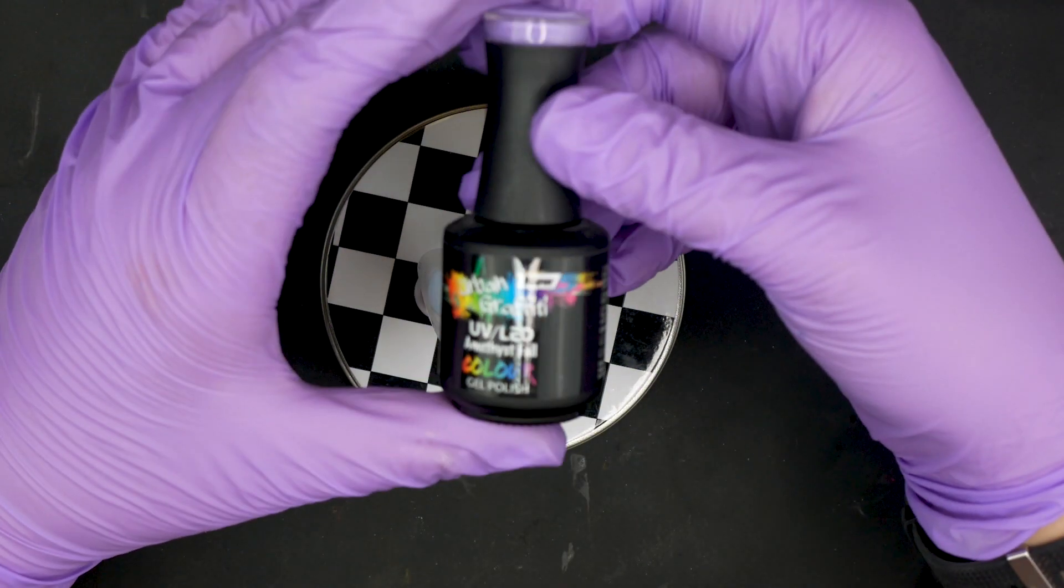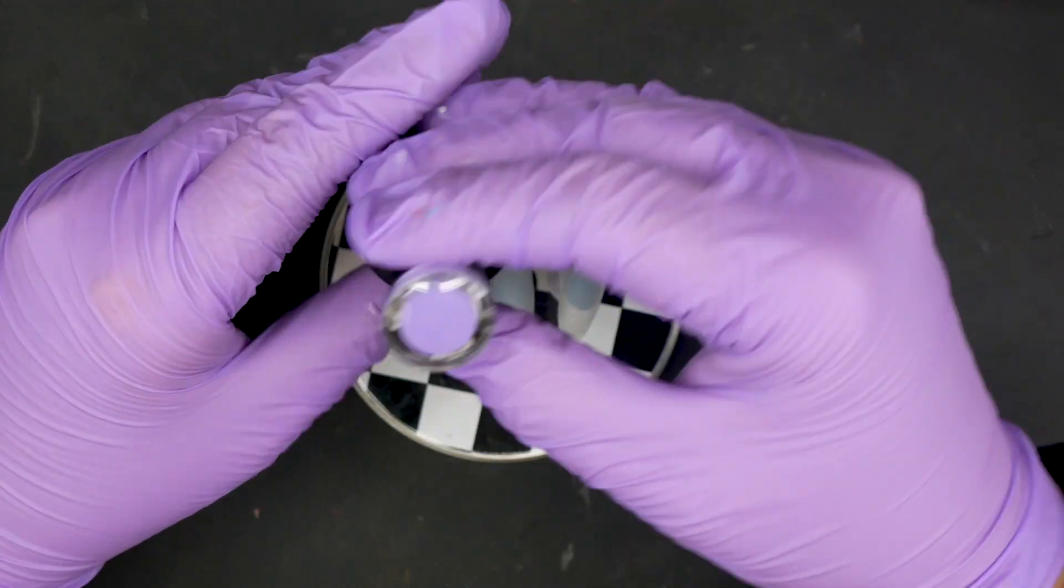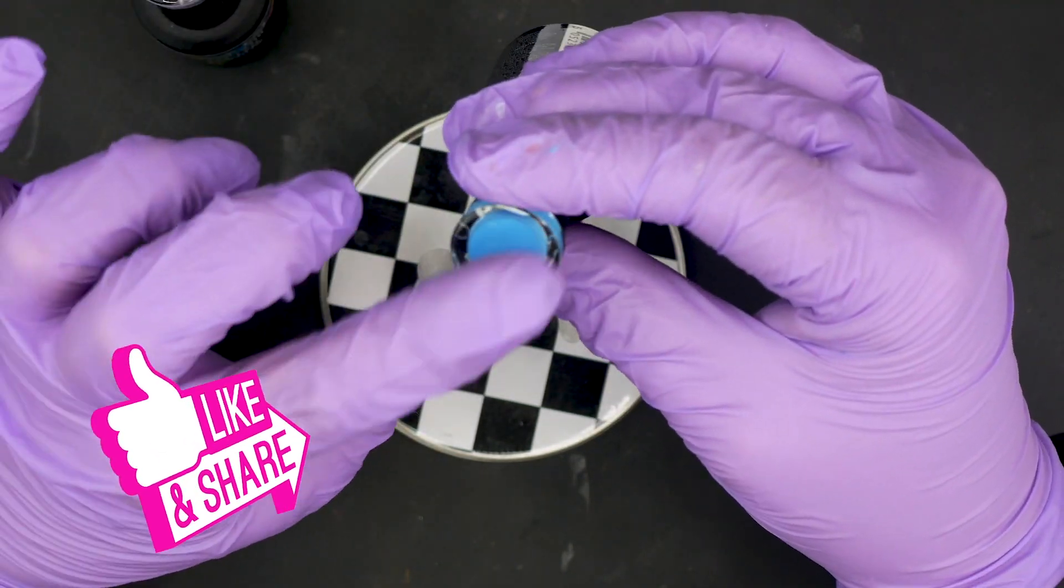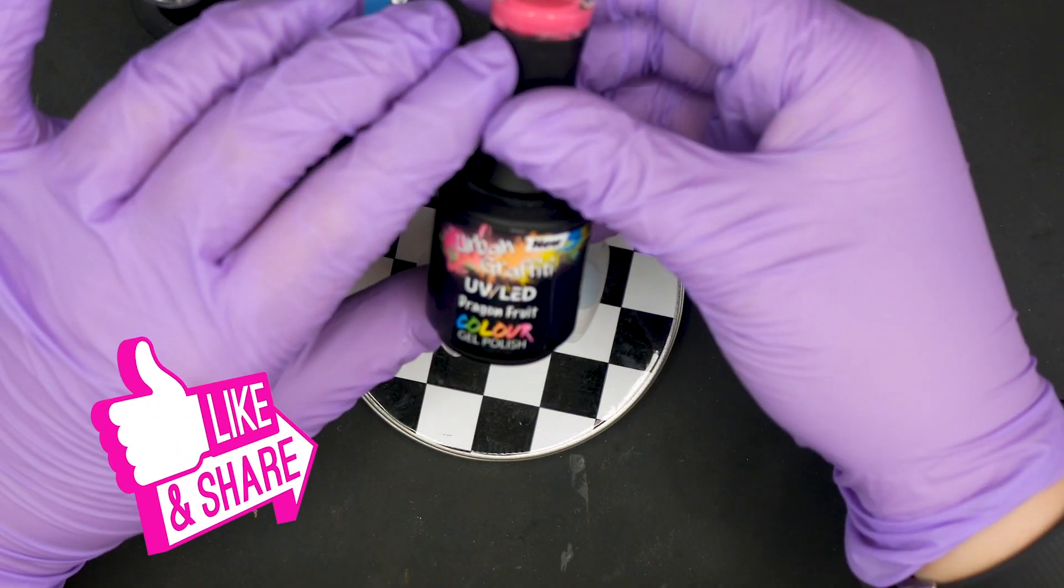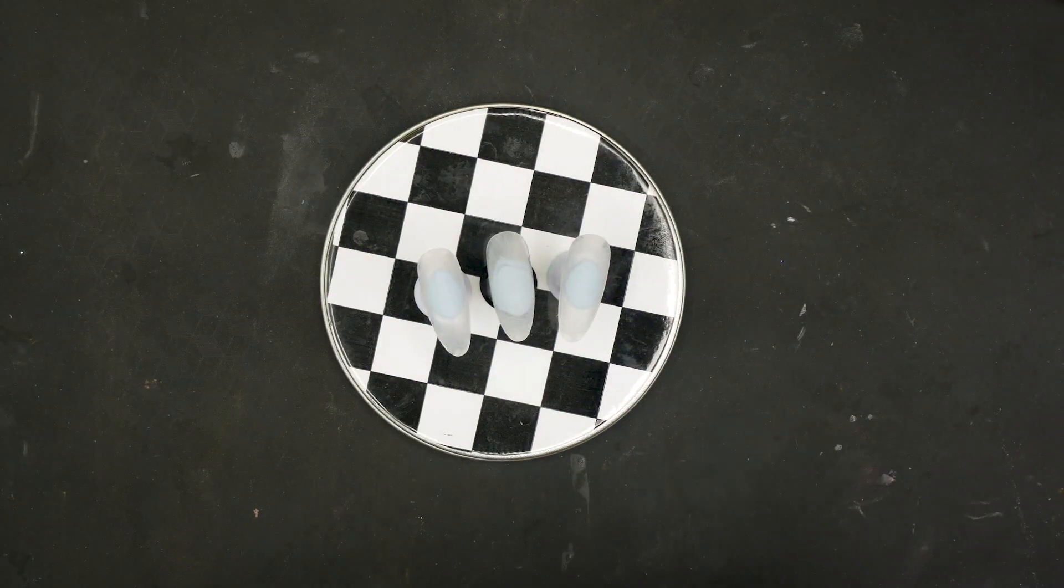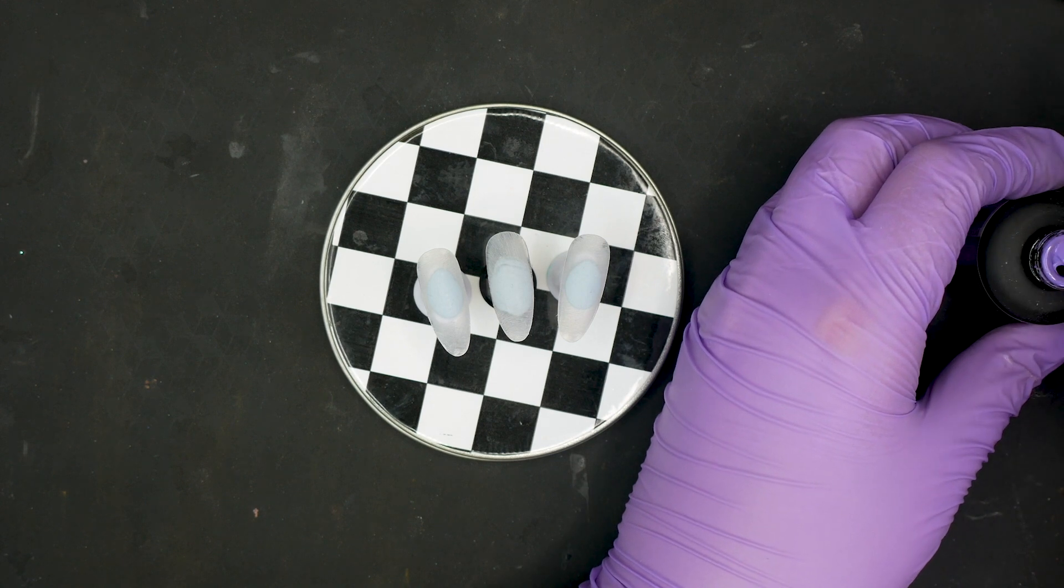So we're going to use these three colors for our base colors today. We're going to use Amethyst Fall which is a lovely purple, Summer Sky which is a lovely blue, and Dragon Fruit which is a really nice bright pink. So we're going to paint each of our nails with one of these colors.